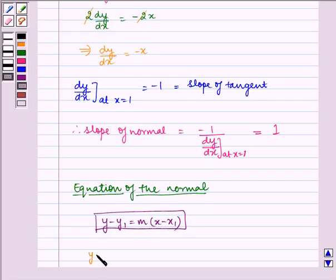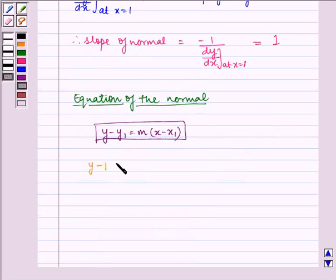So y minus y1 is 1, as x1 and y1 points are given to us as 1 and 1, which equals m that is 1 multiplied by x minus 1.